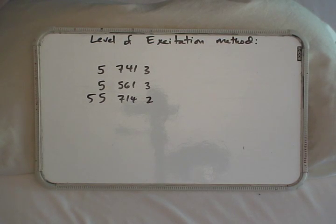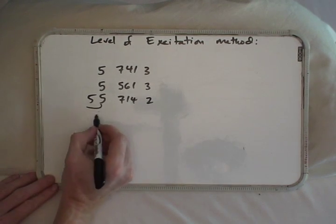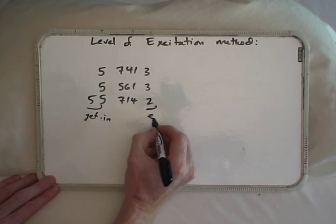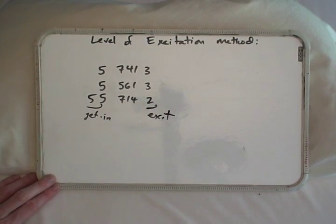The easiest way to do excited state transitions is with the so-called level of excitation method. What that method requires is that you know what the get-in or start-up sequences are and also what the exit sequences are for any given trick.